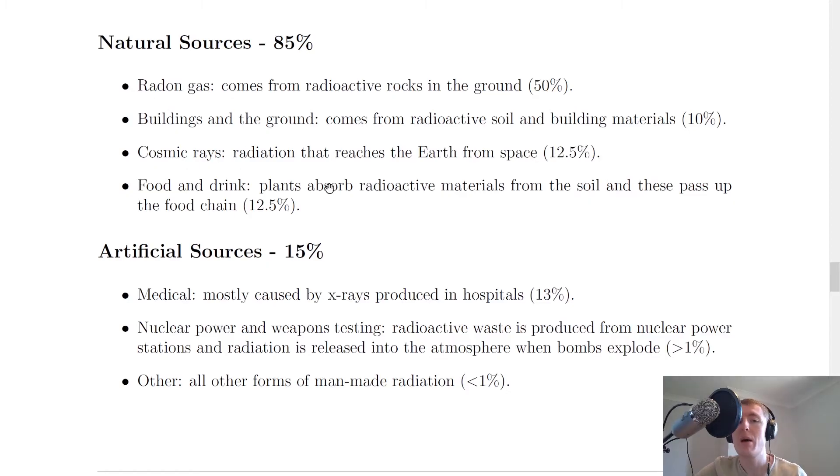And lastly, food and drink. Plants absorb radioactive materials from the soil, and these pass up the food chain. And this again contributes about 12.5% to the overall background radiation. So natural sources overall contribute about 85% of all background radiation. So the majority of sources aren't natural.